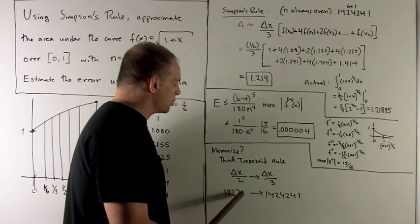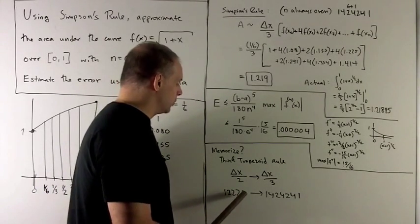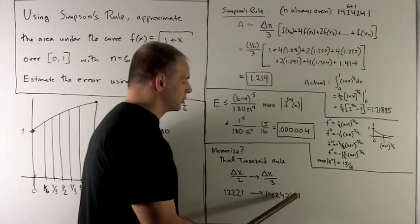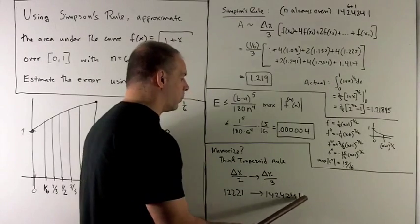And our pattern for the trapezoid rule, which is 1, 2, 2, 2, 2, 2, 1, just turns into a 1, 4, 2, 4, 2, 4, 2, 4, always ends on a 4, and then a 1.